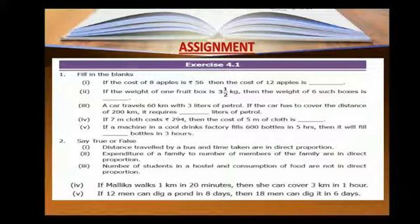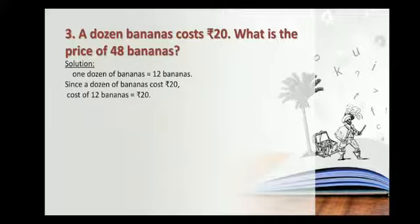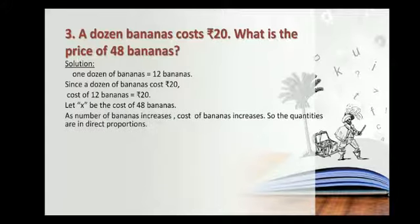We will move to other problems in Exercise 4.1. Third one: a dozen bananas cost rupees 20. What is the price of 48 bananas? A dozen means 12 numbers. So the cost of 12 bananas is 20 rupees. We need to find the cost of 48 bananas. We take X as the cost of 48 bananas. The quantities compared are number of bananas and cost. As the number of bananas increases, cost of bananas also increases. So here the quantities are in direct proportion.